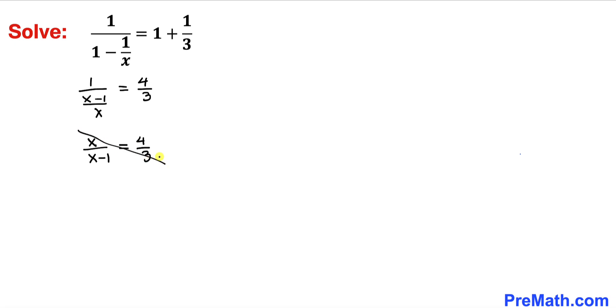Now let's go ahead and cross multiply. So therefore we're going to multiply this way first. So we get 4x minus 4 equals to 3x.